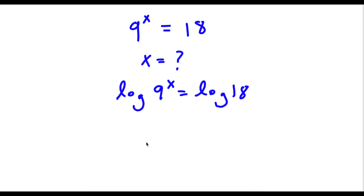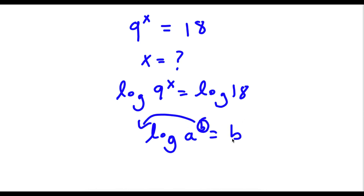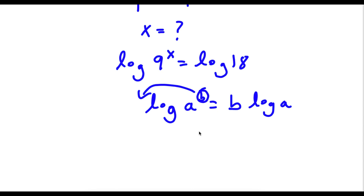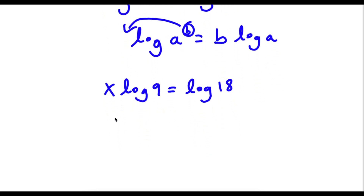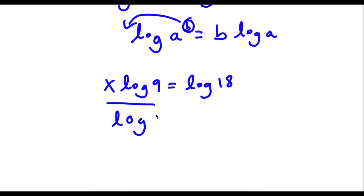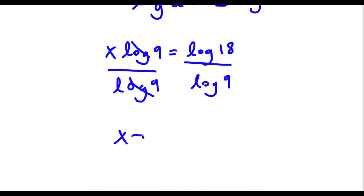Now if I have something in the form log a to the power of b, I can move this exponent b to the front of the logarithm. So this would equal b times log a. So now I have x times log 9 is equal to log 18. I'm going to divide both sides by log 9, so these two cancel out, and I'm left with x equals log 18 over log 9.